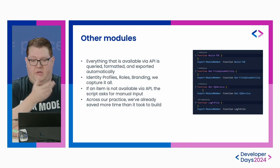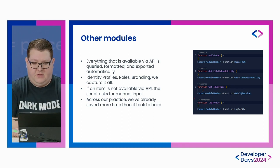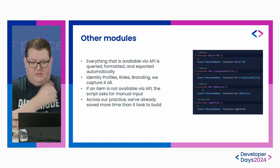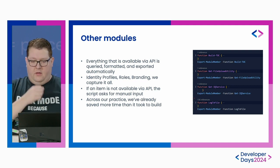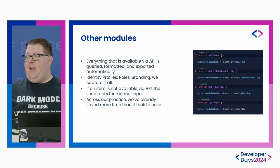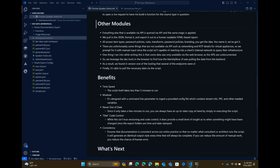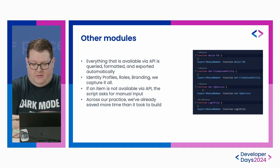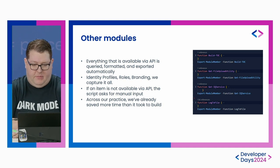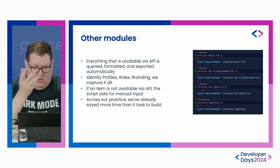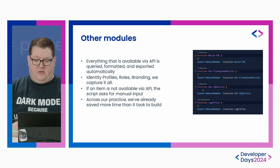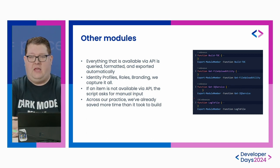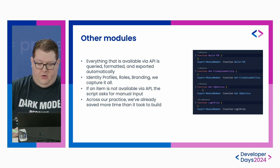Beyond the sources, we have other module types. Everything else that is available via the API is queried, and we do that same magic — pull in the JSON, format it just like the sources, and export the HTML-based report. All of our access profiles, roles, password policies, rules, transforms, et cetera — you name it, we output it.